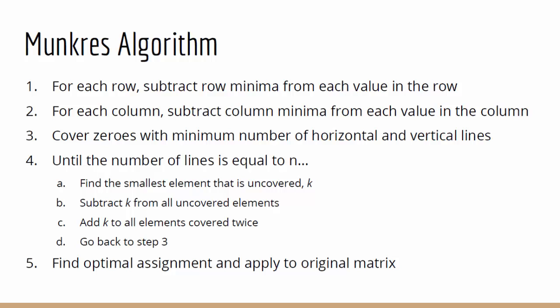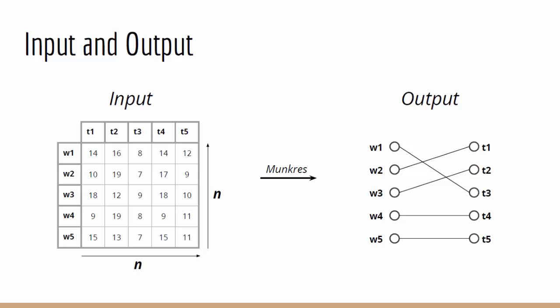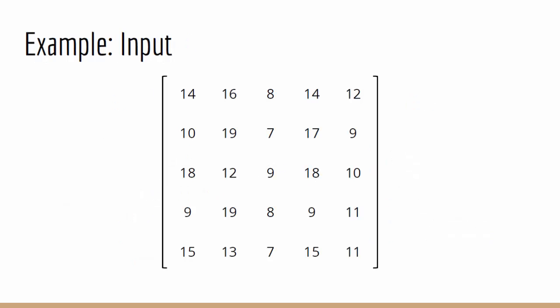Now I'll go through an example of using Munkres' algorithm. The input to the problem is a 5x5 matrix describing how much it costs for each worker to do each task. The desired output is a minimum cost perfect matching between workers and tasks. This can be represented in the form of a bipartite graph.